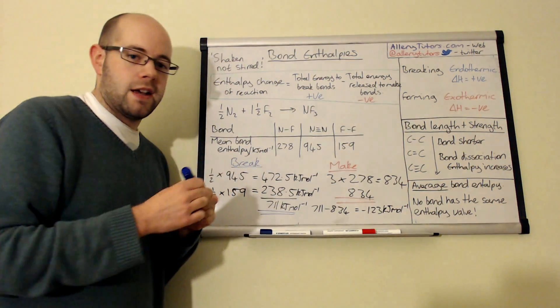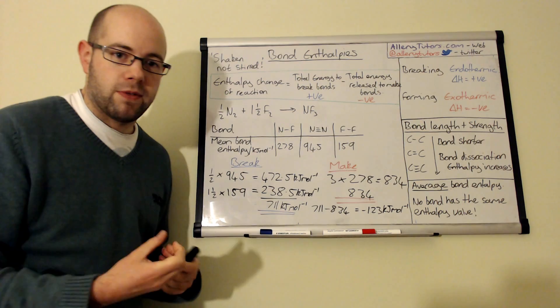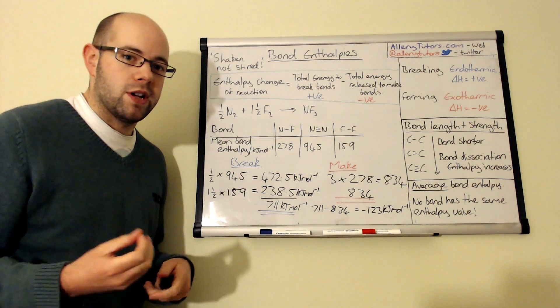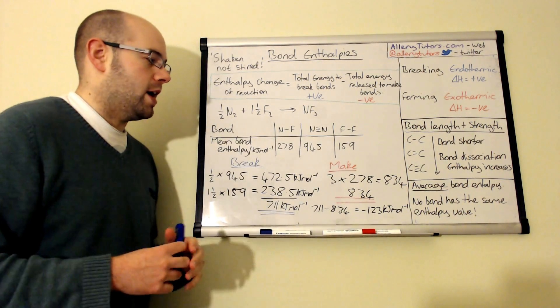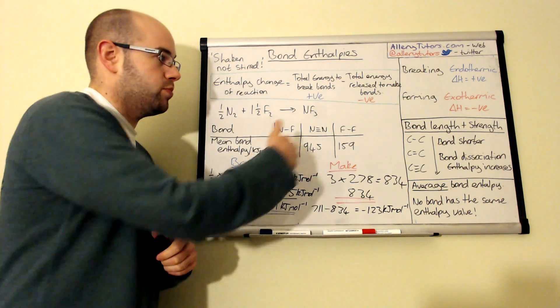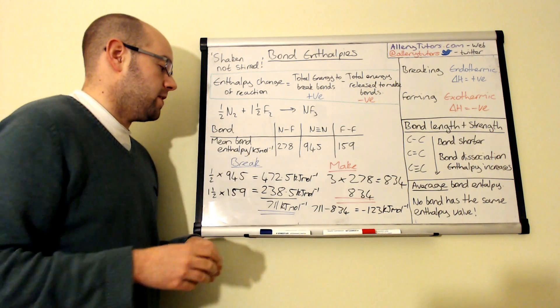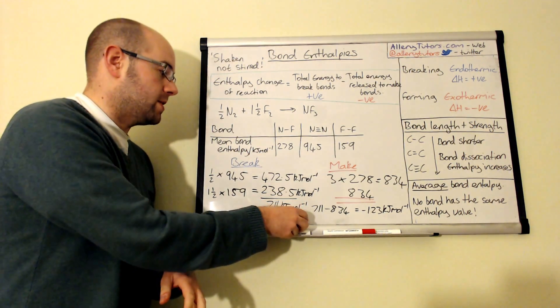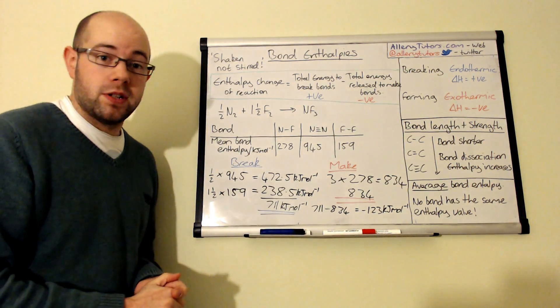Now you can see that obviously you can look at this value here and you'll see that it's exothermic. This reaction gives out heat energy. The reason why is because more energy is actually given out when we're making the bond products, or the products with bonding, than we actually need when breaking them.